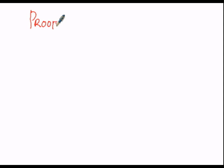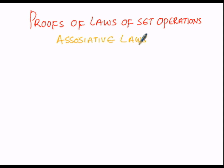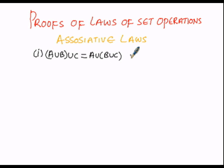Proofs of Laws of Set Operations. In this topic, we are going to discuss the proofs of laws of set operations for the third case, which is about the associative laws. Under associative laws, we are going to prove two conditions: the first is (A∪B)∪C = A∪(B∪C), and the second is (A∩B)∩C = A∩(B∩C).